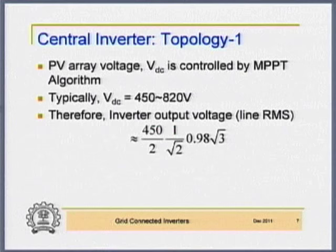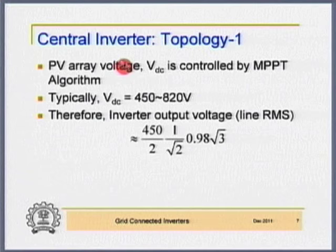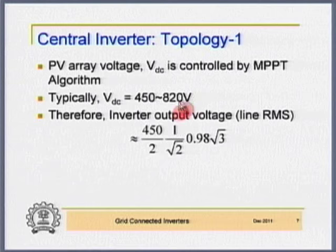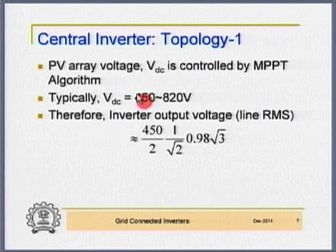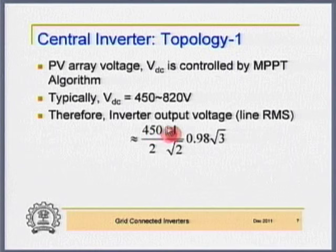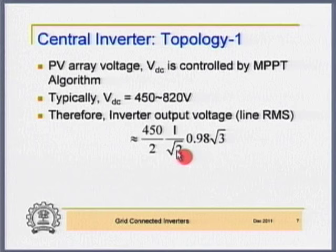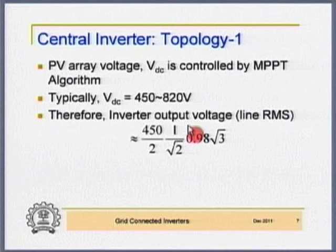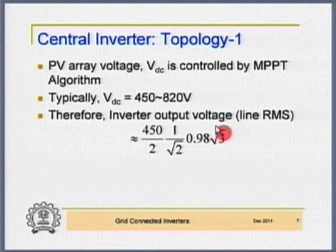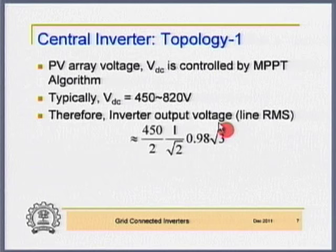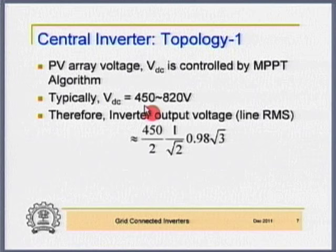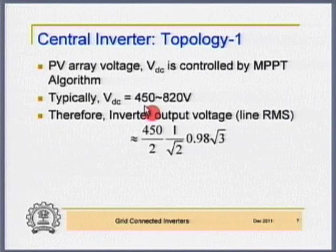The PV array voltage V_DC is directly controlled by the MPPT algorithm. The operating point of the string is determined by the MPPT. Typically, DC link voltage is of the order of 450 to 820 volts. When the DC link voltage is 450 V, the inverter output line RMS voltage would be: (450/2) × (1/√2), which gives the RMS phase voltage; multiplied by √3 gives the line voltage, with 0.98 as the modulation index. The V_DC reference is set by the MPPT and the remaining control stays the same.